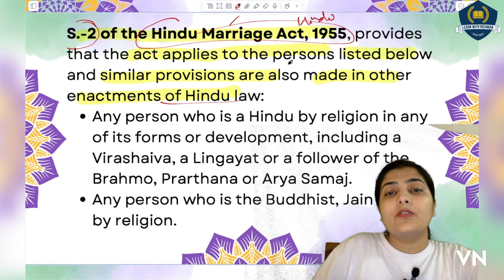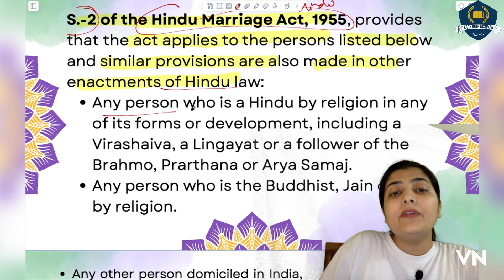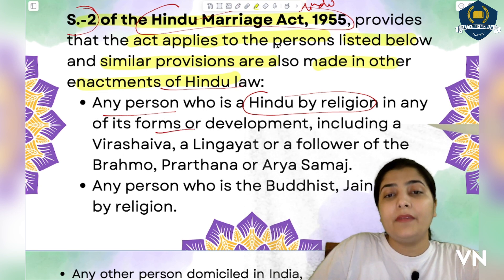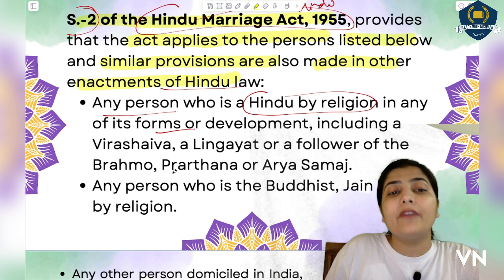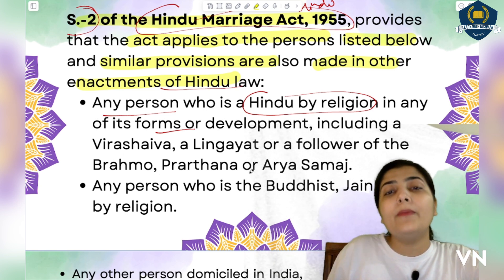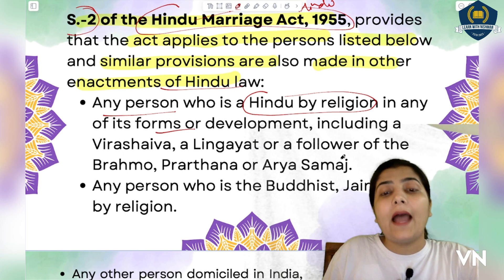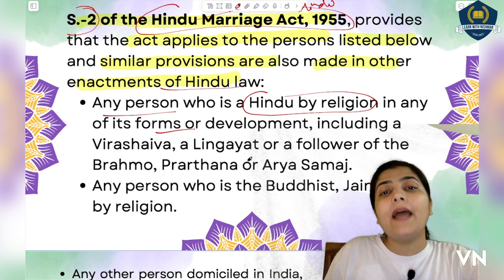Now, who are those people? Let's see each category. First: any person who is a Hindu by religion in any of its forms or developments — that is, a person who by religion is Hindu. This includes a Veerashaiva, a Lingayat, or a follower of Brahma Samaj, Prarthana Samaj, or Arya Samaj. People who follow these religious traditions are considered to be following the Hindu religion and will come under the category of Hindu.